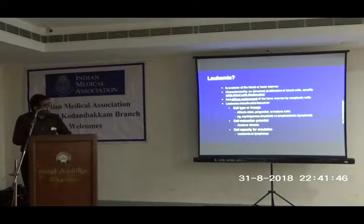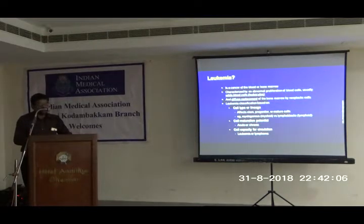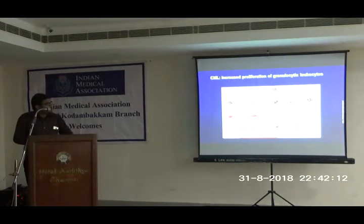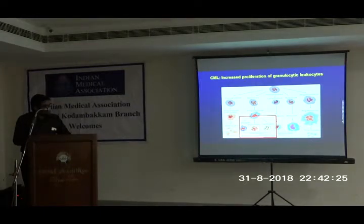What is leukemia? It is a cancer of the blood or bone marrow, characterized by abnormal proliferation of blood cells, usually white blood cells, and diffuse replacement of bone marrow by neoplastic cells. Leukemia is classified based on cell type, maturation potential, and capacity for circulation. This pictogram shows the normal development of hematopoietic cells, giving rise to proerythroblasts, myeloblasts, lymphoblasts, monoblasts, and megakaryoblasts, and further to basophils, neutrophils, eosinophils, lymphocytes, and monocytes.